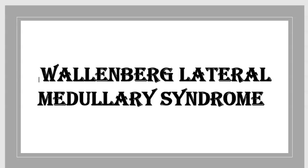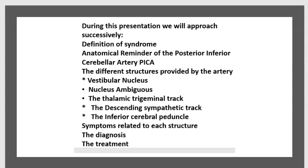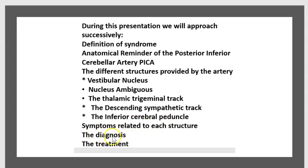Today's topic is Wallenberg lateral medullary syndrome. During this presentation, we will approach successively: the definition of the syndrome, anatomical overview of the posterior inferior cerebellar artery (PICA), the different structures provided by the artery — vestibular nucleus, nucleus ambiguus, thalamic trigeminal tract, descending sympathetic tract, inferior cerebellar peduncle — symptoms related to each structure, the diagnosis, and the treatment.